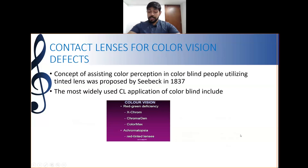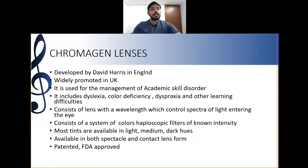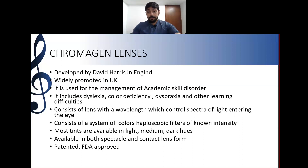Chromogen lenses — also known as Imaginex lenses — were developed by David Harris in England and are widely promoted in the UK. They are used for the management of academic skill disorders including dyslexia, color deficiency, dyspraxia, and other learning difficulties. They consist of lenses with specific wavelengths controlling the spectra of light entering the eye, using a system of color haploscopic filters of known intensity.